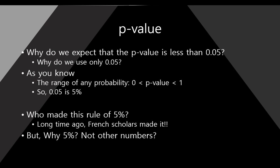As I said, the range of any probability is from 0 to 1, because this is a probability — only the value is from 0 to 1. So 0.05 is 5%. Who made this rule of 5%? Why not 7% or 10%?